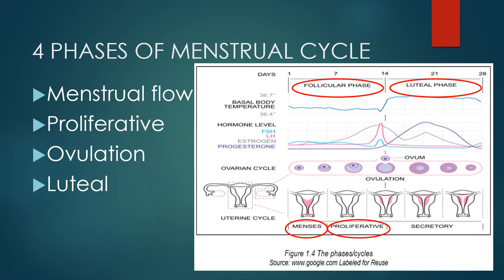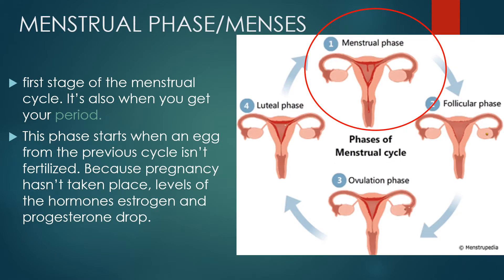Let's proceed with the four phases of the menstrual cycle. First is menstrual flow or demensis, second is proliferative or follicular, third is ovulation, and fourth is luteal. The menstrual phase is the time when you get your period. It starts when an egg from the previous cycle isn't fertilized. The thickened uterine lining sheds through your vagina as your period, and during this time you suffer from menstrual cramps as estrogen and progesterone levels drop.